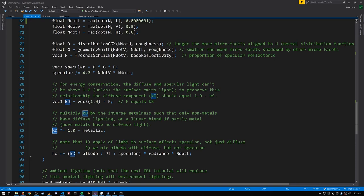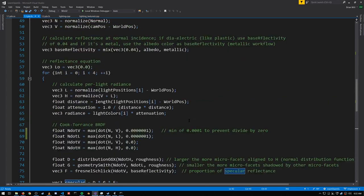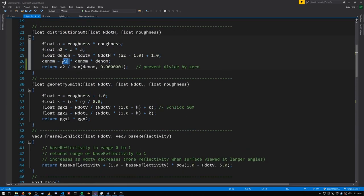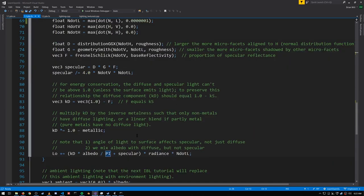Having computed KD, we can finally get our output luminance for this one light by multiplying the KD times the albedo, divided by pi, for reasons I don't really understand, other than the specular term is also divided by pi in the distribution function up here. I think that's the rationale, basically, to even out the diffuse and specular components, but I can't say for sure.